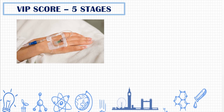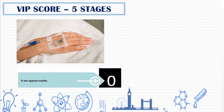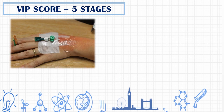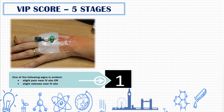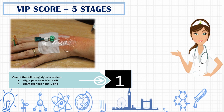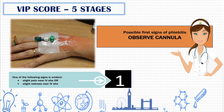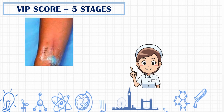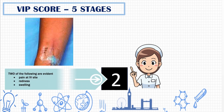Now let's see the VIP score and its five stages. If you find no symptoms of phlebitis and the IV site appears healthy, your score is zero — observe the cannula at every shift. If you find any one symptom — the patient either complains of pain or you find redness near the IV site — your VIP score is one, indicating possible signs of phlebitis; monitor the cannula site frequently. If you find any two symptoms such as pain, redness, or swelling, the score is two — this is the early stage of phlebitis and you need to re-site the cannula.